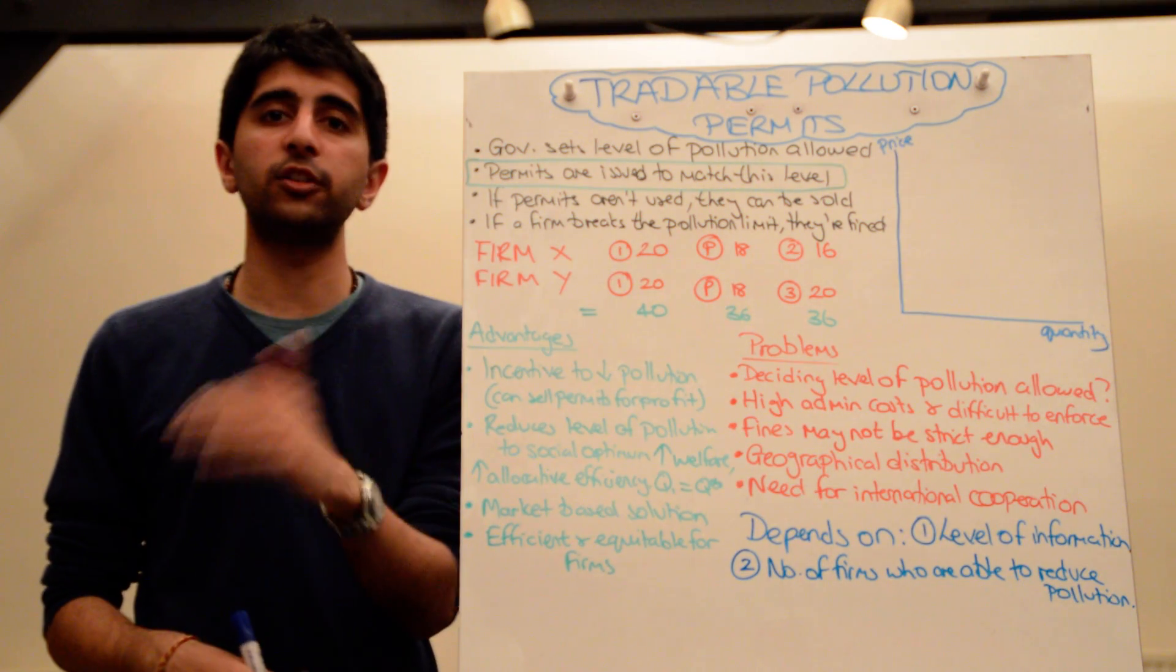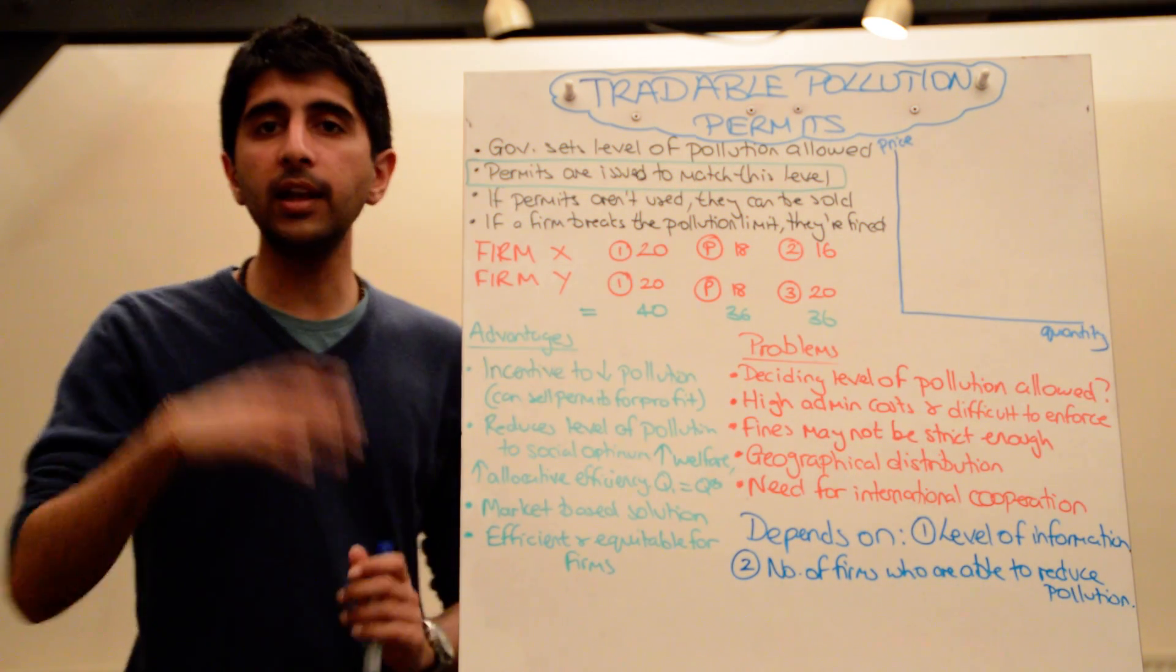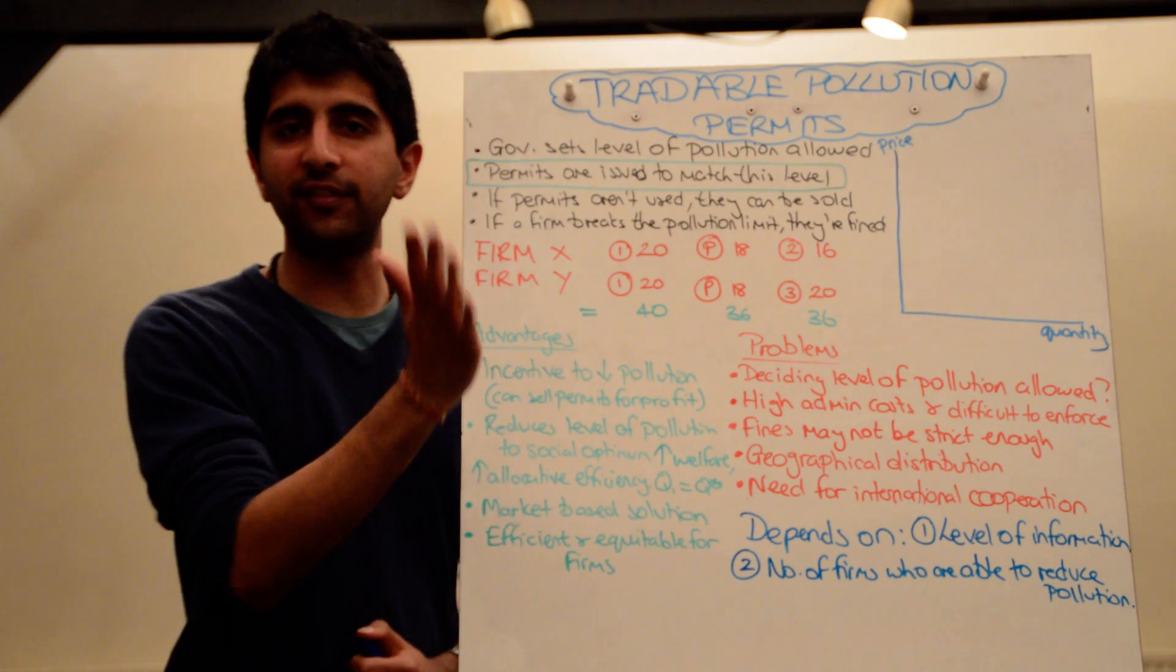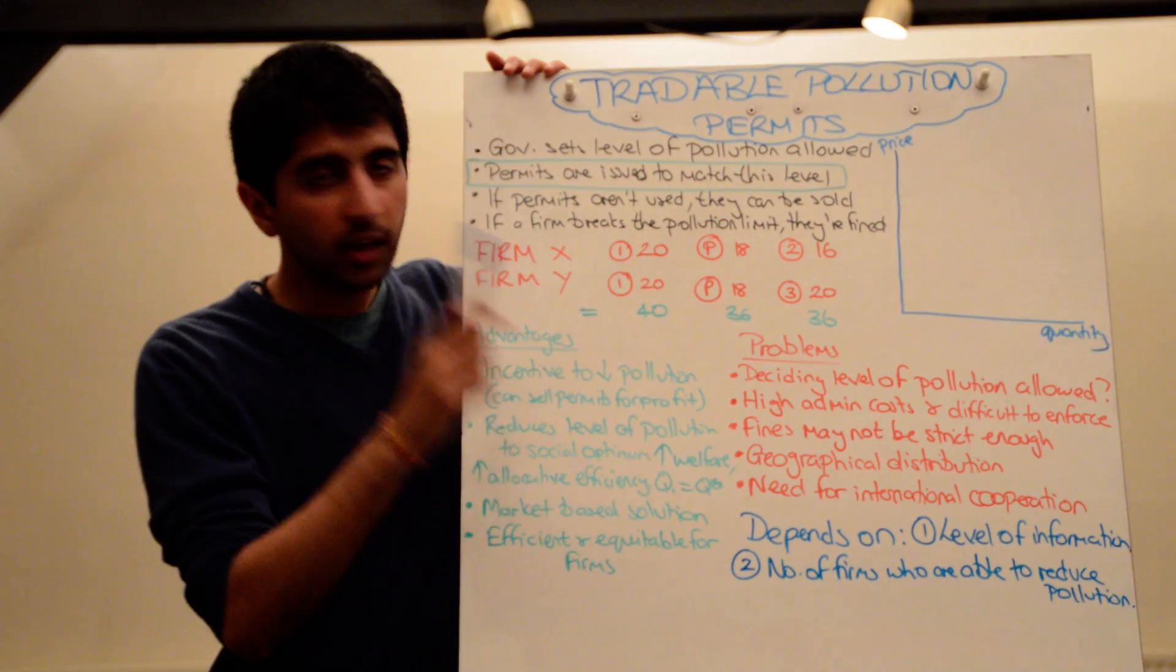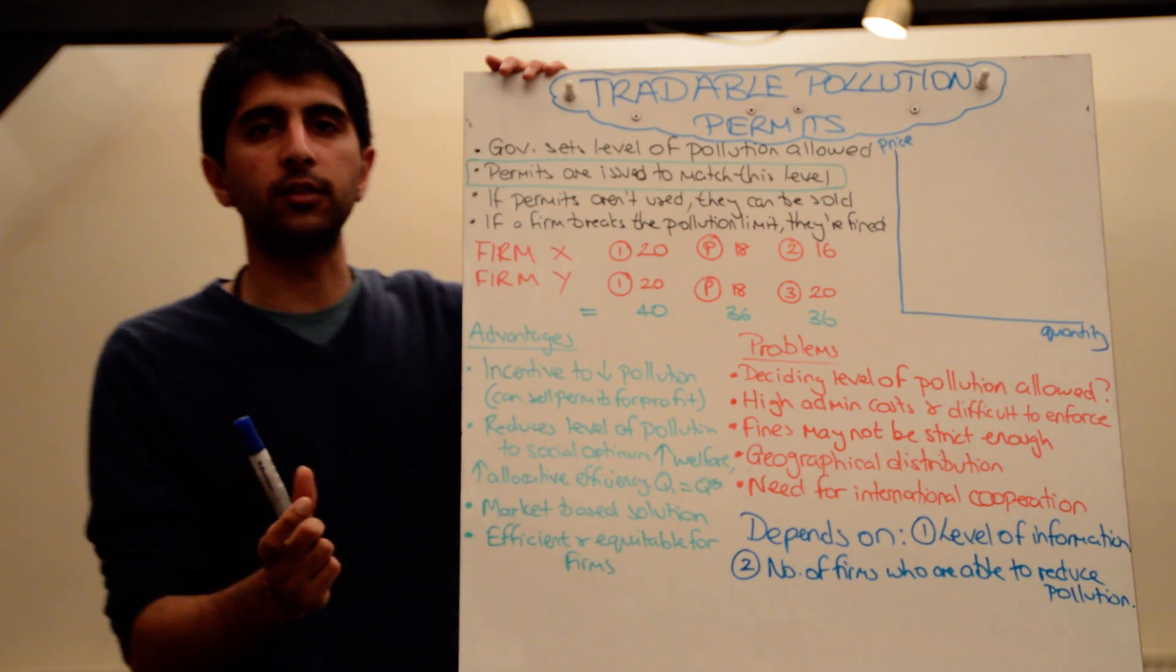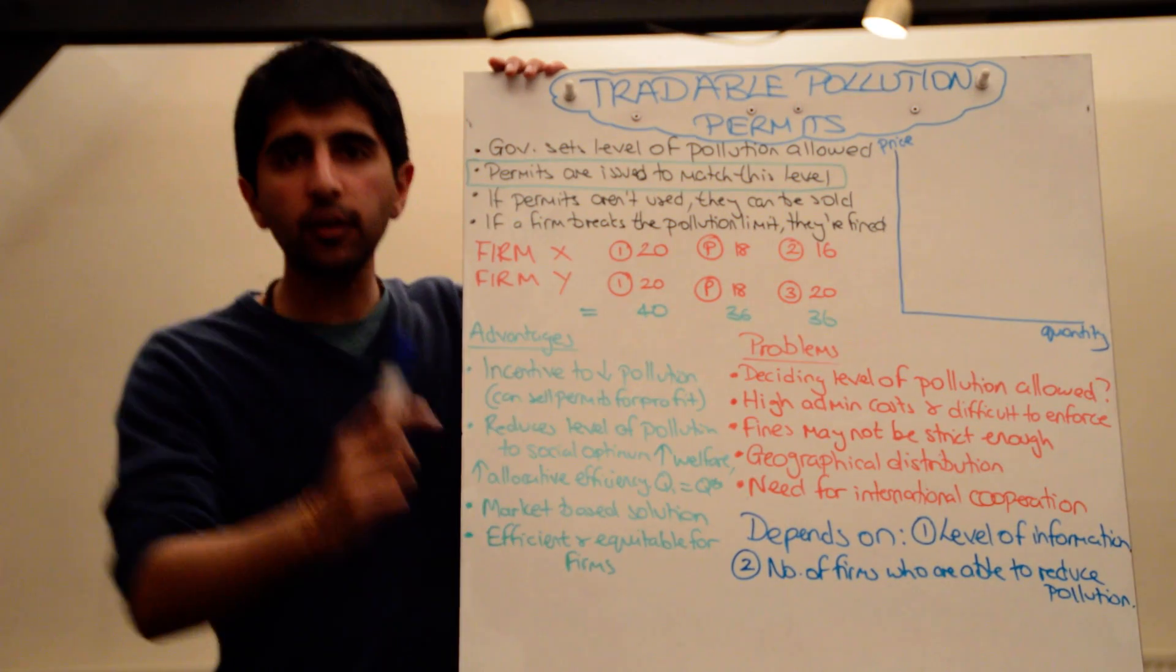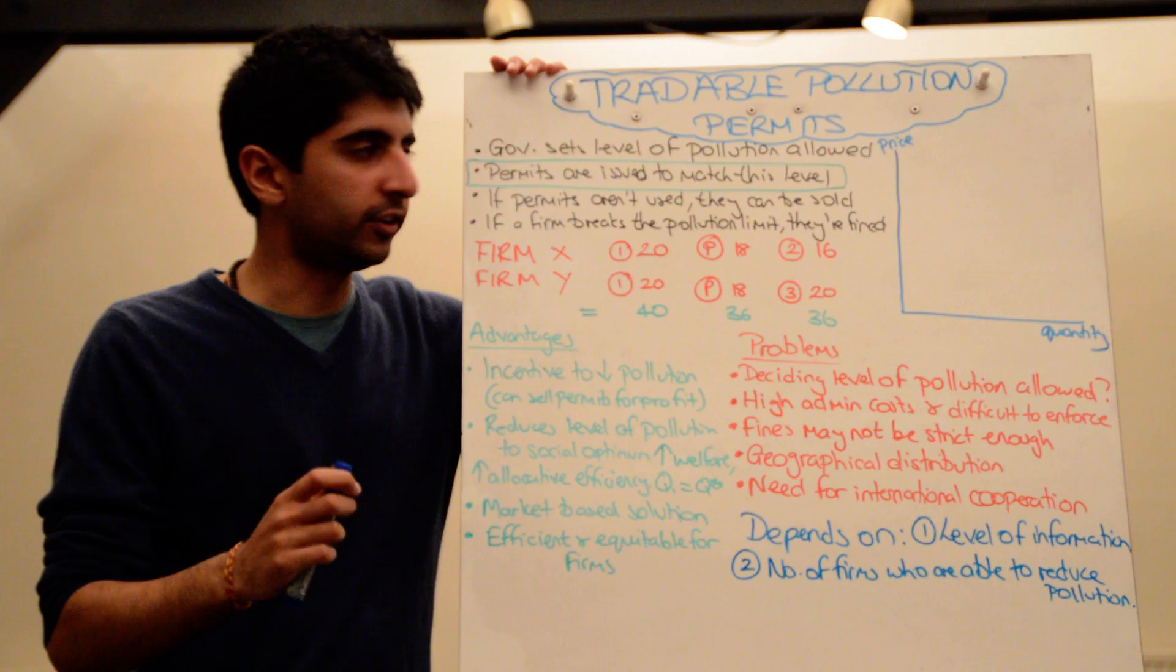So either way, their cost of production is going to increase. Supply for that firm is going to shift to the left. But, at the same time, they can make two separate decisions. Either to buy permits, or to invest in new technology, in green technology.